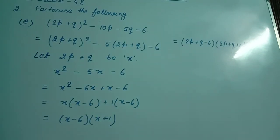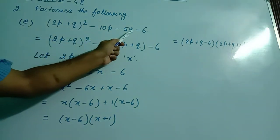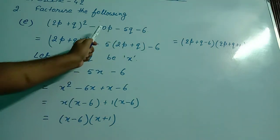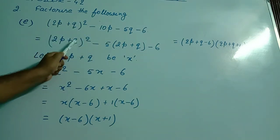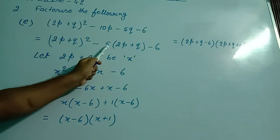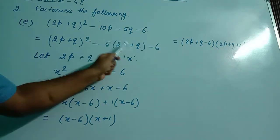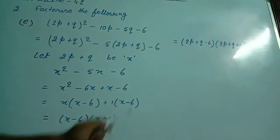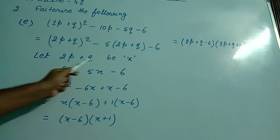In question number 2e, the equation is (2p + q)² - 10p - 5q - 6. In the second step, I took 5 as common and wrote (2p + q)² minus 5 common, so 2p is left, and with the minus-plus-minus sign, q is left, and minus 6 is written. To make the solution easy, I considered 2p + q to be x.